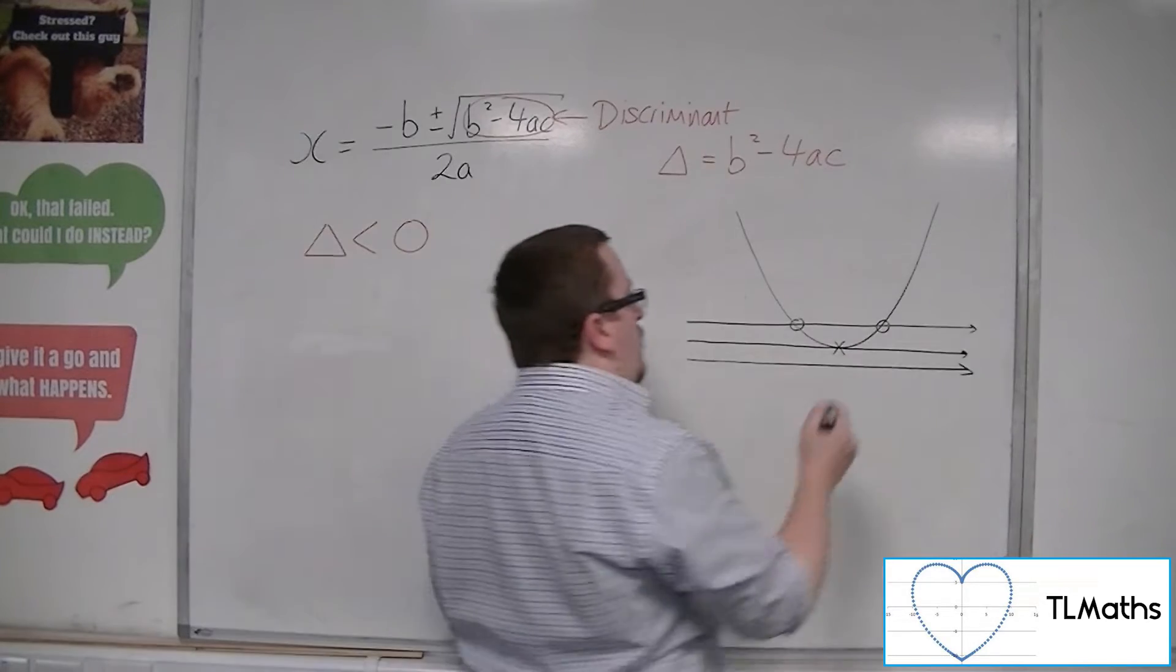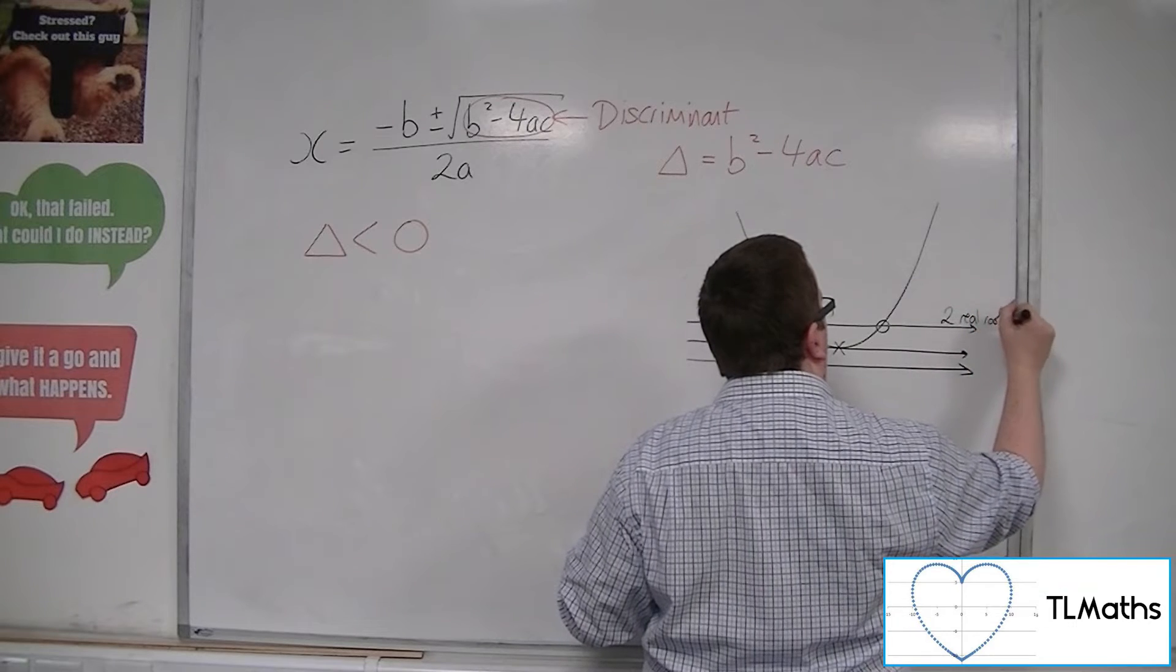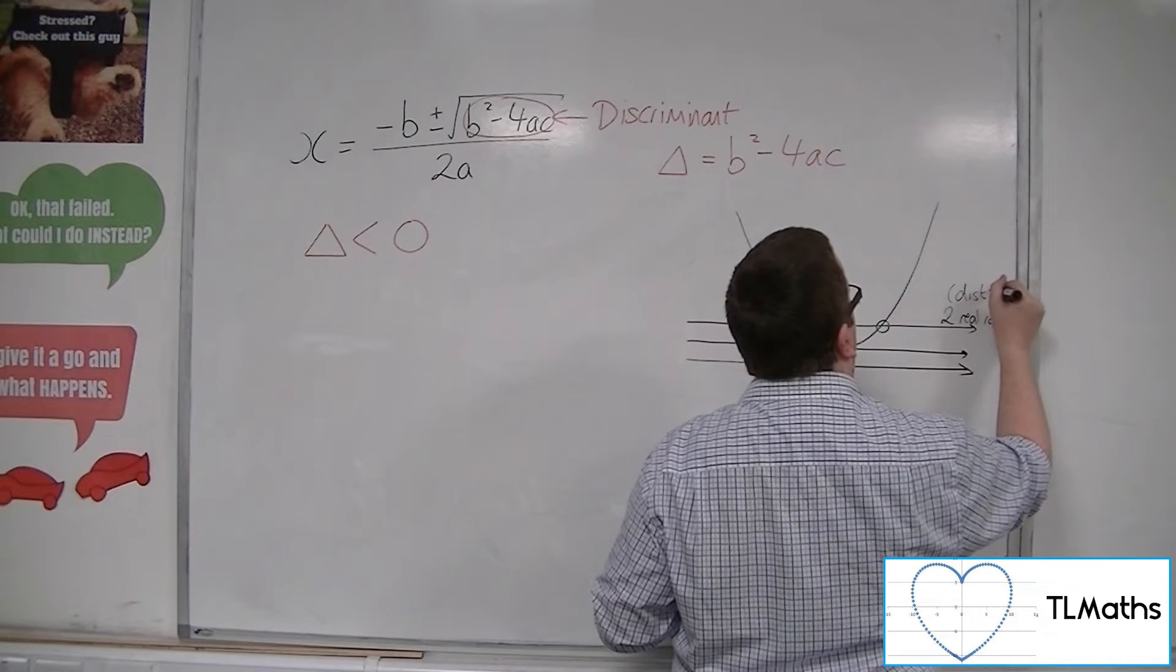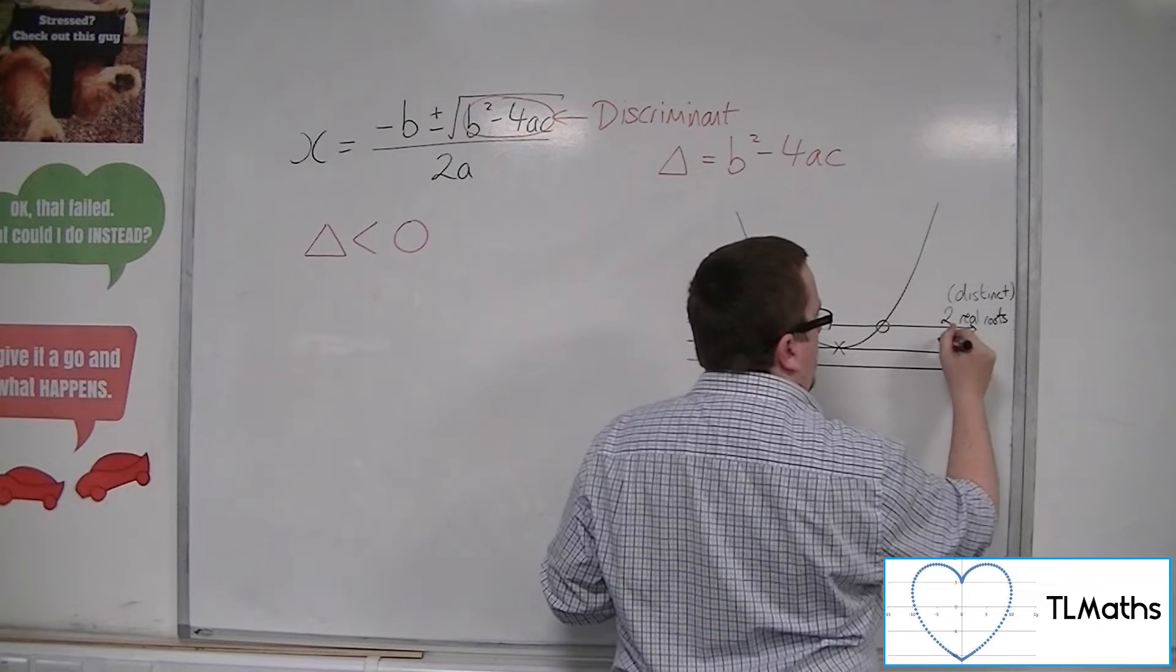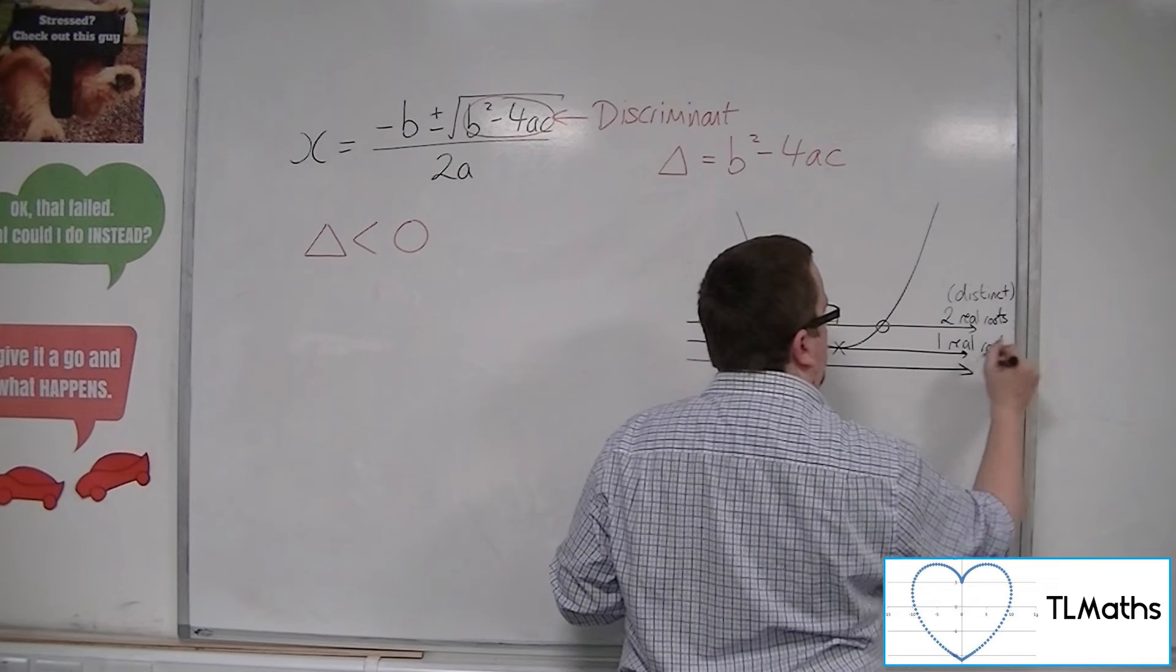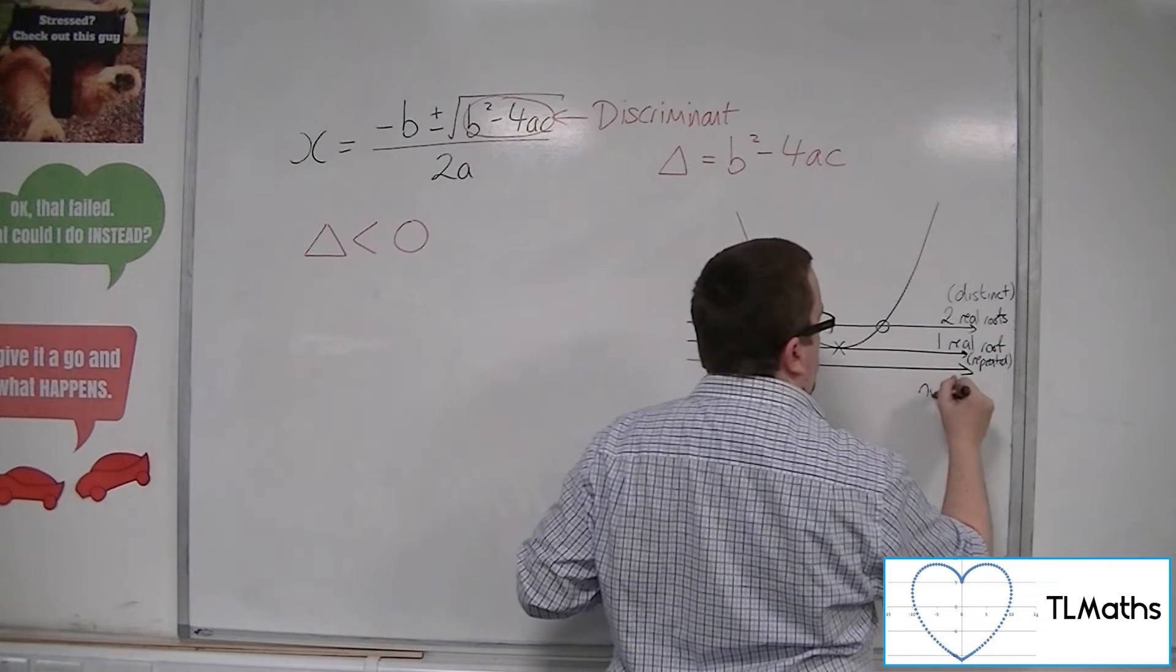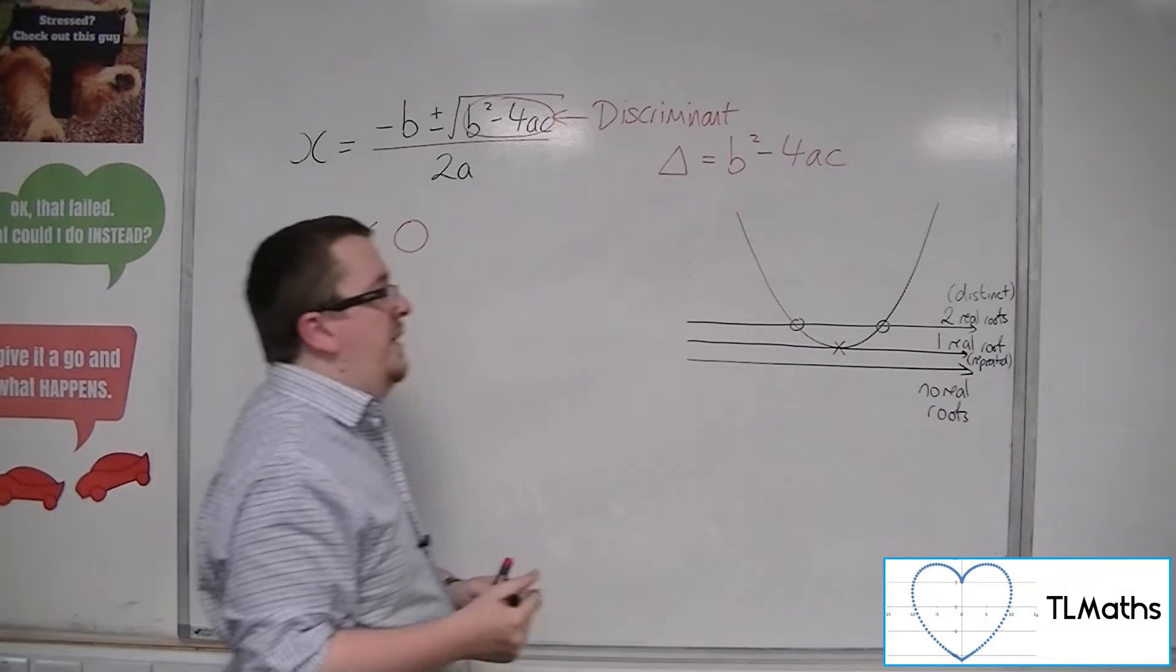So we've got here two real roots, as we would call them, two real distinct roots. So we should probably put distinct next to that. So here we've got one real root, which we often refer to as a repeated root. And here we've got no real roots, because that line does not cross the curve.